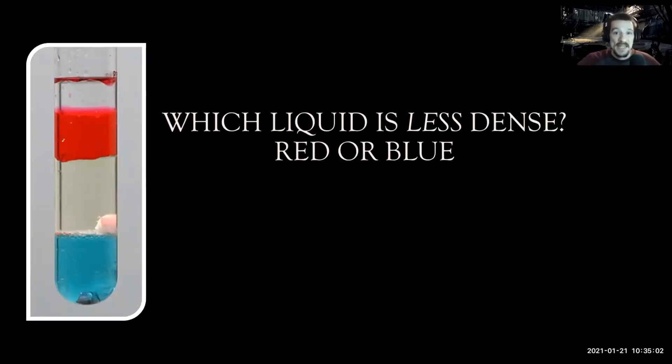The water went up by 8 milliliters, so the volume of the rock is 8 milliliters. Now look at this image: which liquid would be less dense, the red liquid or the blue liquid? The blue liquid is on bottom, the red liquid is on top. That means the red liquid is less dense, the blue liquid is more dense.